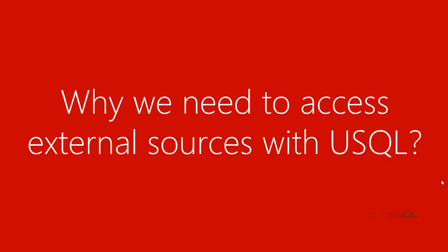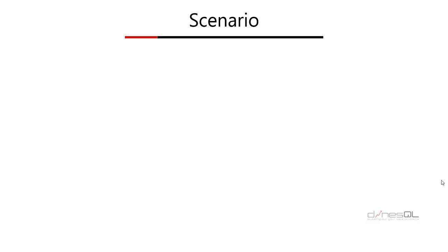Why do we need to access external sources using USQL? Let's try to understand this with a few scenarios. Let's say I have an external data source — a SQL Server database. I want to get a dataset from my SQL Server database, do some transformation, and pass the result to Azure Data Lake Store. I can use various techniques for implementing this — Azure Data Factory pipeline or an integration service package.